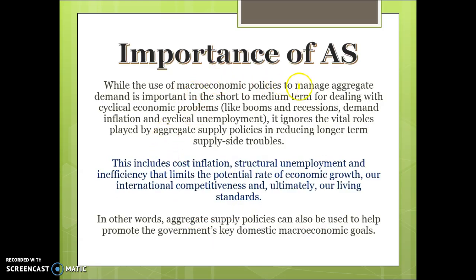Without the use of aggregate supply policies, we're not going to be able to achieve strong and sustainable growth. The use of macroeconomic policies to manage demand will help in the short to medium term, such as avoiding recessions, but it is not as effective in the long term. Supply-side policies are needed to reduce structural unemployment, and demand policies won't stop people from buying foreign products instead of Australian products, because they don't help us lower our prices and become competitive. Supply policies are critical if we want to achieve our domestic macroeconomic goals.